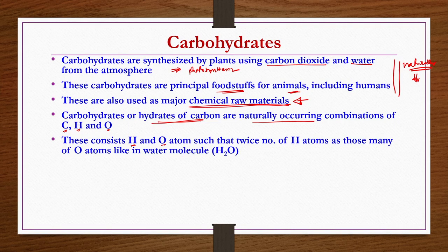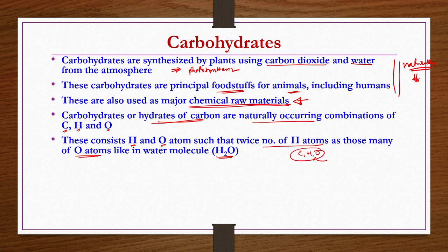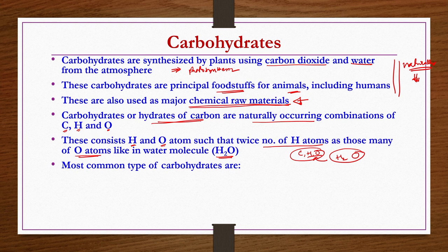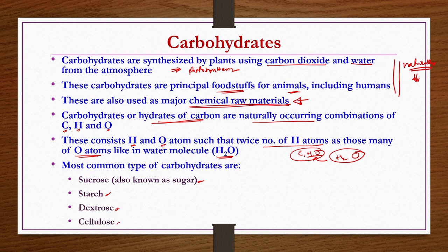Carbohydrates consist of H atoms and O atoms in such a way that there are twice as many H atoms as O atoms, just like in a water molecule — one O atom and two H atoms. So in carbohydrates, C, H, and O are present with a ratio of 2 H atoms per 1 O atom. The most common types of carbohydrates are sucrose (also known as sugar), starch, dextrose, and cellulose.